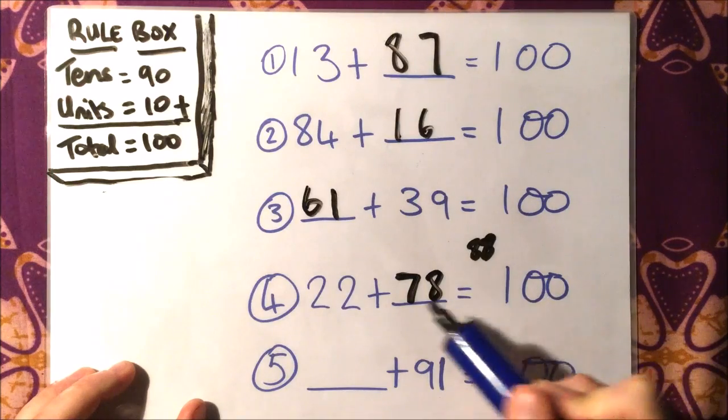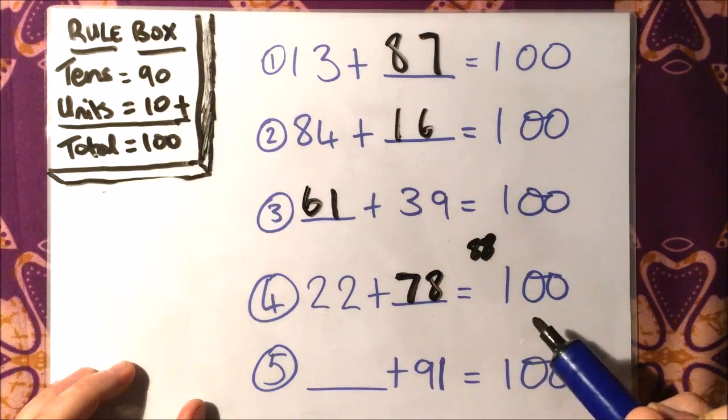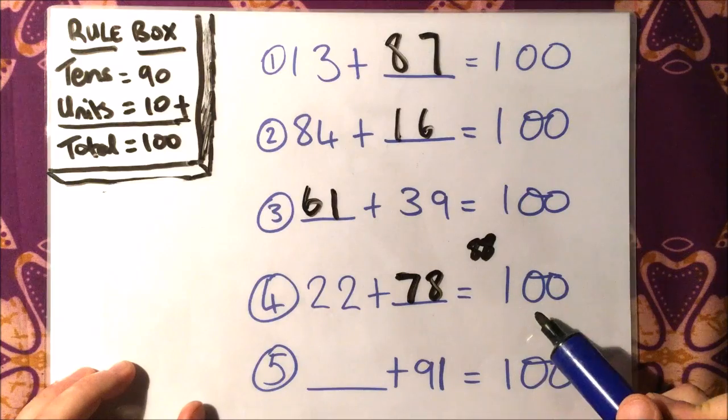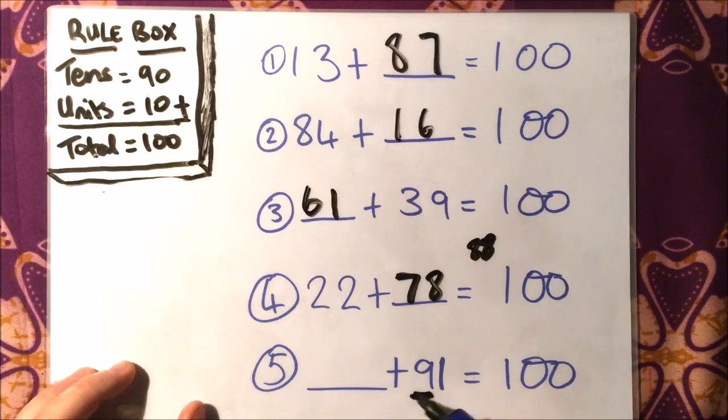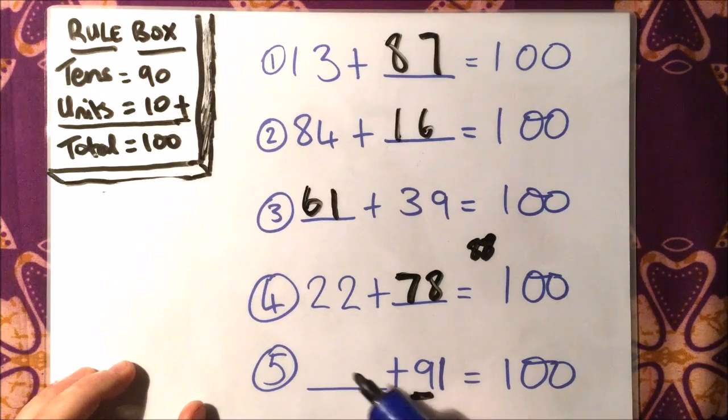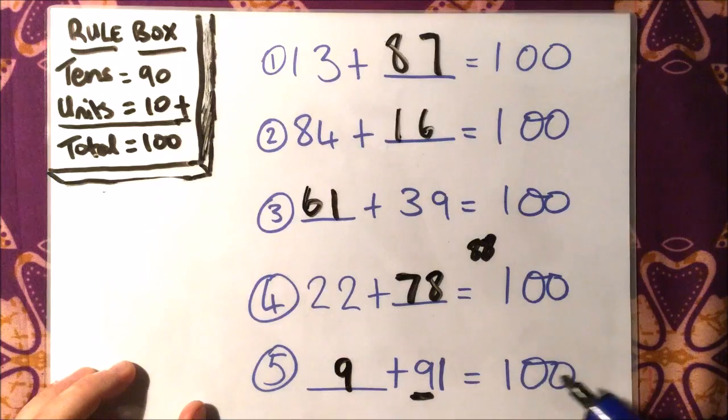And finally, I've already got 90 here, so I don't need to add any tens at all. So what do I need to add to the 1 to make the 10? I only need to add 9. A bit of a trick question. Hopefully you didn't get scuppered by it.